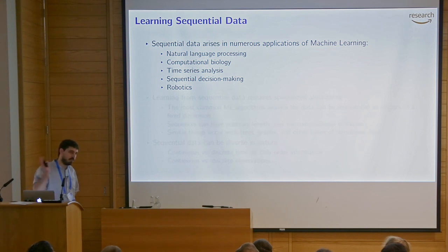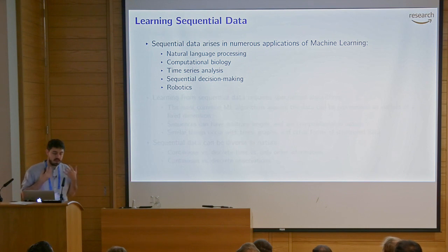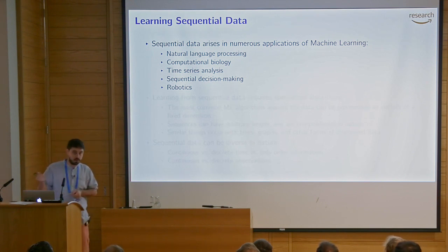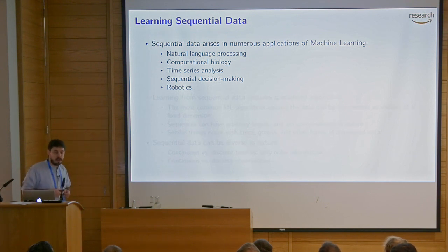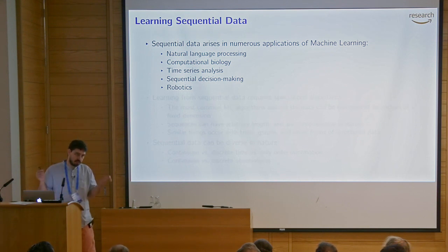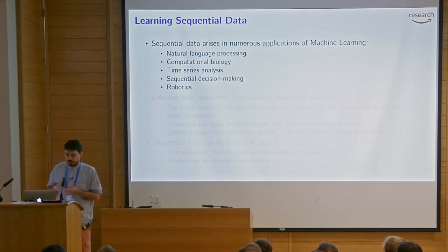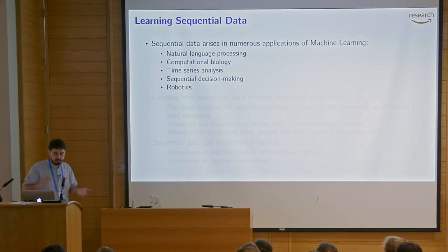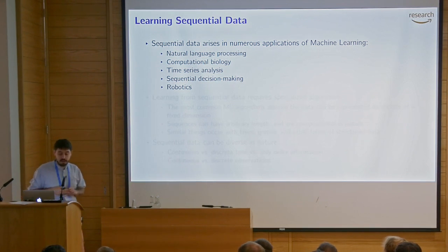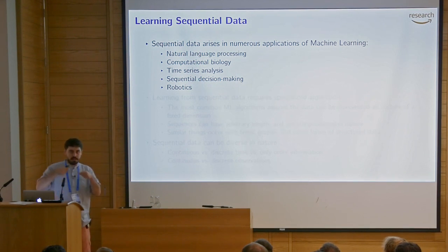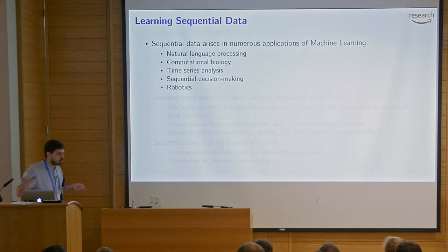Sequential data. Whether you come more from logic or from learning, it's pretty obvious that if you think about learning from real data, there are lots of examples where you'll have sequential data. Starting with natural language processing, where you have sequences of words as sentences and sequences of sentences as documents. In computational biology, when we represent DNA as sequences of ACTGs or proteins as sequences of amino acids, you're dealing with sequential data. Time series analysis is data that by nature is ordered in time. Sequential decision making and robotics — robots that interact with an environment see sequences of observations and take sequences of actions.